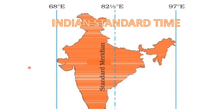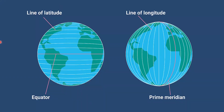Before knowing about what is Indian Standard Time, let us quickly recall what are latitudes and longitudes. These lines of latitudes are the parallels or full circles that run across the globe. There are totally 180 lines of longitudes, and the equator is the largest line of latitude. Latitude is one of the important factors that determines the climate of a place. These lines of longitudes are semi-circles that meet at poles — they are not parallel. The zero degree longitude is called the prime meridian.